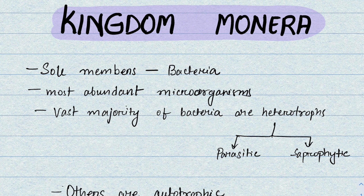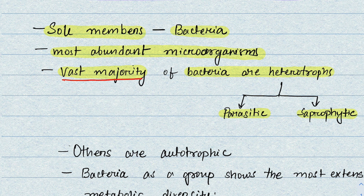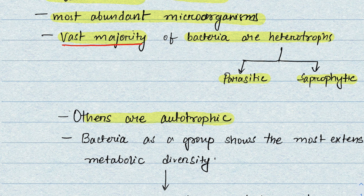Kingdom Monera means bacteria — the sole members of Kingdom Monera are bacteria. These bacteria are the most abundant microorganisms on Earth. The vast majority of bacteria are heterotrophs, meaning they cannot produce their own food — they are parasitic or saprophytic. The minority of bacteria are autotrophic, able to prepare their own food.